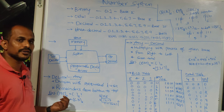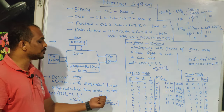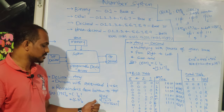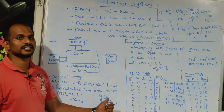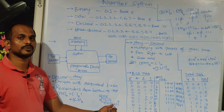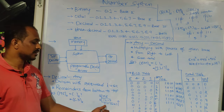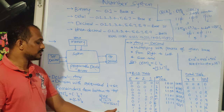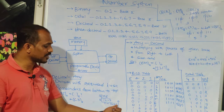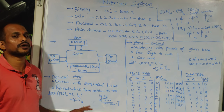For example, take the decimal number 195 and convert it to hexadecimal. Divide 195 by 16: 16 goes once giving 16, remainder 3; then 35 divided by 16 gives 2 remainder 3; then 12 cannot be divided by 16, so take 0 with remainder 12. Since 12 in hexadecimal is C, reading the remainders from bottom to top gives the hexadecimal number C3.